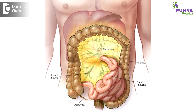The mesentery is something like a fan-shaped structure which has a wide outer part, because it is connecting to the small intestine, and a very closely connected base. That is why I say it is like a fan.